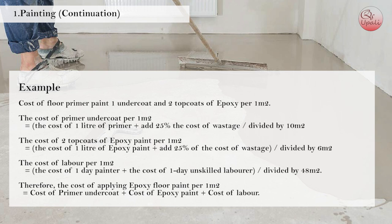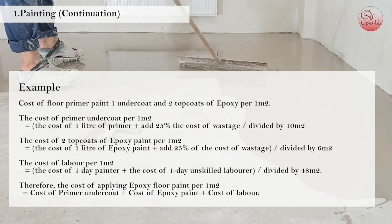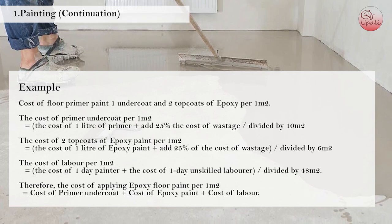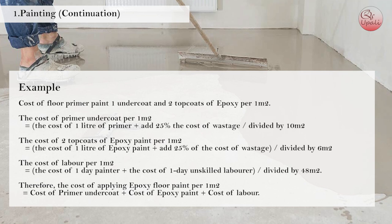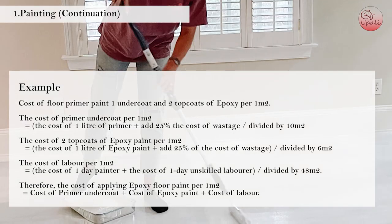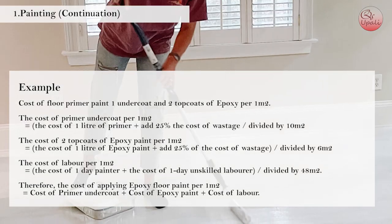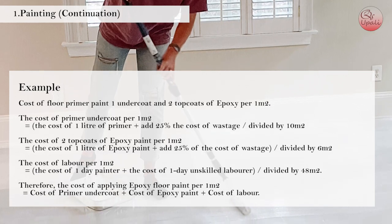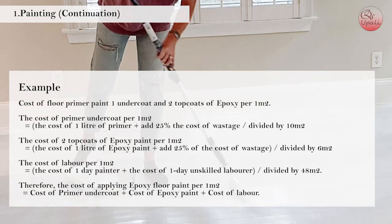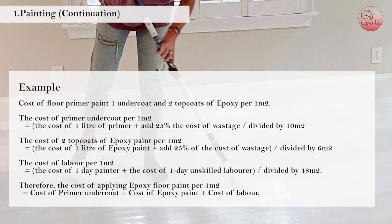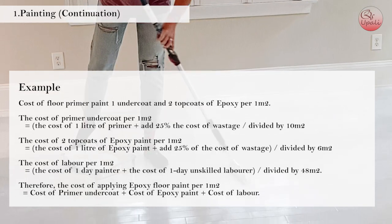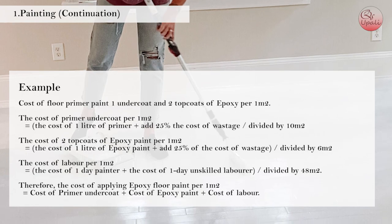The cost of labor per 1 m² equals the cost of 1 day painter plus the cost of 1 day unskilled laborer, divided by 48 m². Therefore, the cost of applying epoxy paint per 1 m² equals the cost of primer undercoat plus the cost of epoxy paint plus the cost of labor.